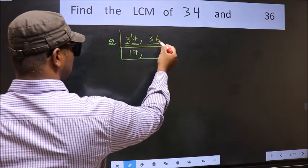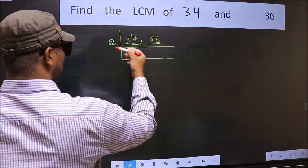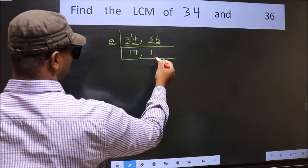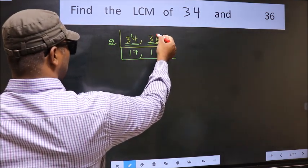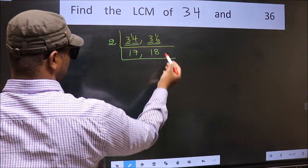The other number 36, last digit 6, so this is divisible by 2. First number 3, a number close to 3 in 2 table is 2, 1, 2. 3 minus 2, 1, carried forward 16. When do we get 16 in 2 table? 2, 8, 16.